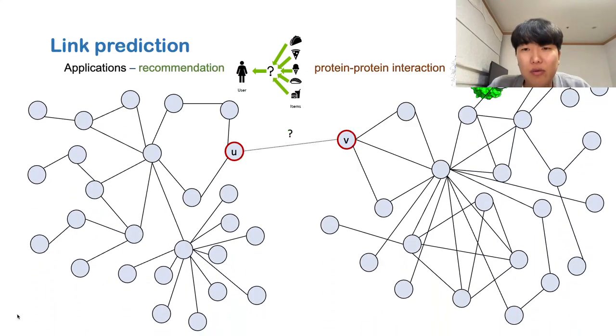However, link prediction on large and dense graphs is highly challenging.